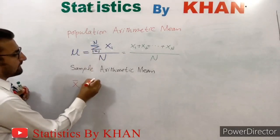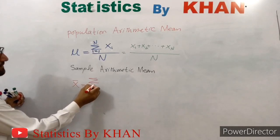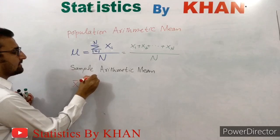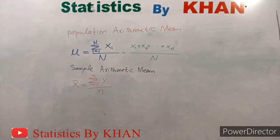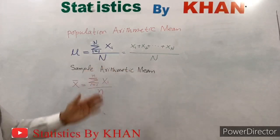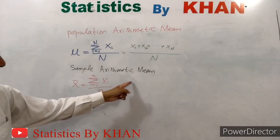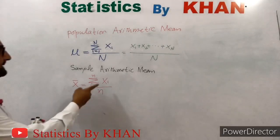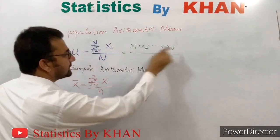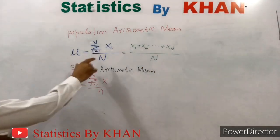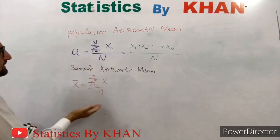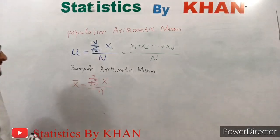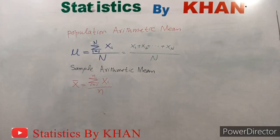The formula for x-bar uses the compact form: summation from i equals 1 to small n of x-sub-i, divided by small n. This is the compact form of x1 plus x2 plus x3 and so on up to xn, divided by small n. In the population case we divide by capital N, while in the sample case we divide by small n. These are the algebraic differences between the population arithmetic mean and the sample arithmetic mean.